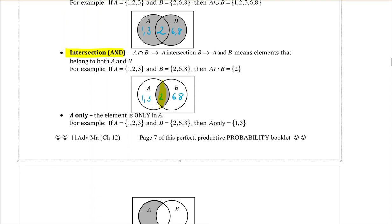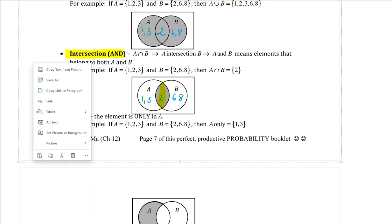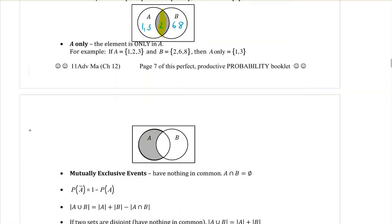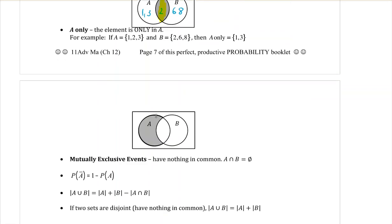If it says 'only', A only, it means the elements that are only in A. So the 2 would not count, and it would just be the 1 and the 3. So A only. And you can see that as a diagram, that means this part of the diagram, not the overlap. So just the A only, not the overlap, not the B, nothing outside the circles.